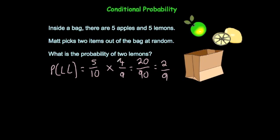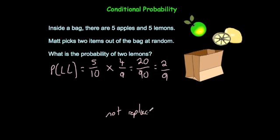Notice that the second outcome is dependent on the first outcome. For instance, if you took a lemon out, the probability of the second one being a lemon is four out of nine. However, if you took an apple out, the probability of a lemon would be five out of nine. So the second probability is dependent on the first event — this is a conditional probability question. Look out for the words 'not replaced' or 'two items are removed', as that means it's going to be conditional probability.